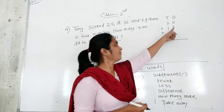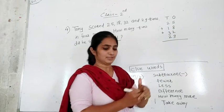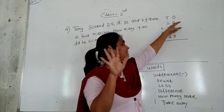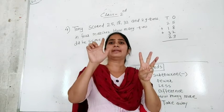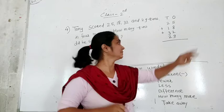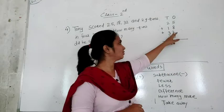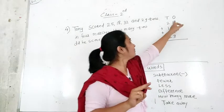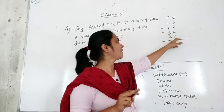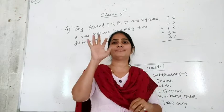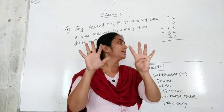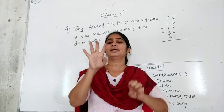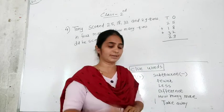We start the addition from the ones digit. First 5 plus 8: counting 8 fingers from 5 — 6, 7, 8, 9, 10, 11, 12, 13. So 5 plus 8 is 13. Now add 2: count 2 fingers — 14, 15. Then add 9: count 9 fingers from 15 — 16, 17, 18, 19, 20, 21, 22, 23, 24.